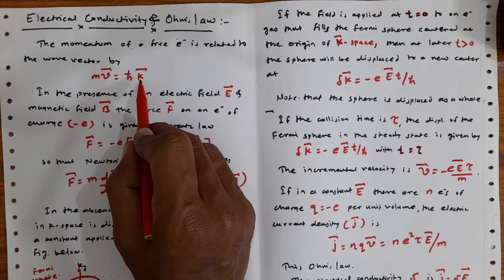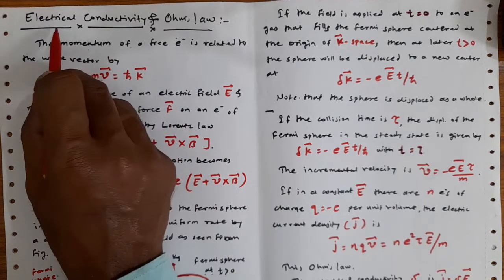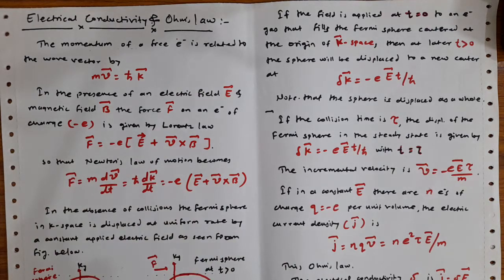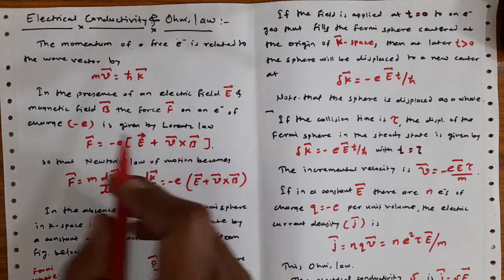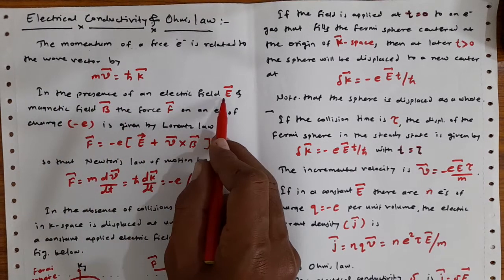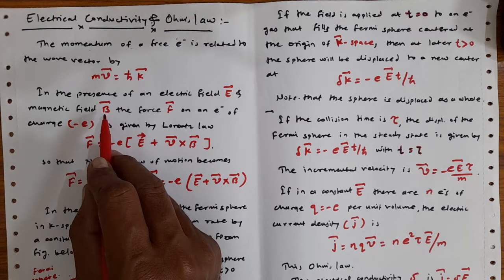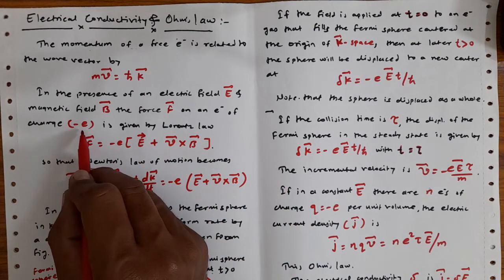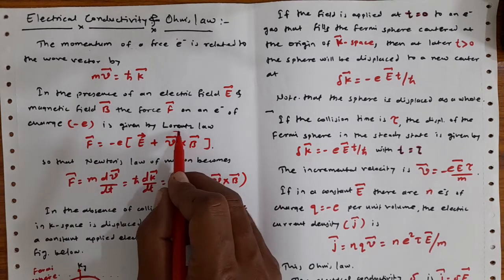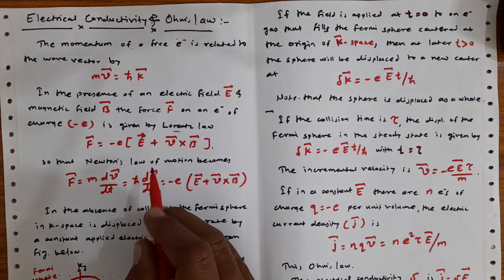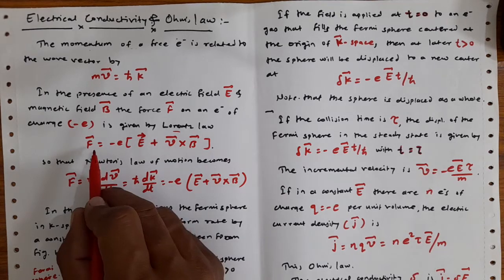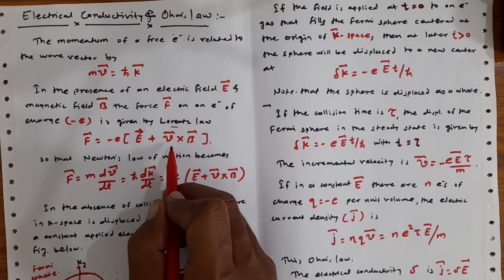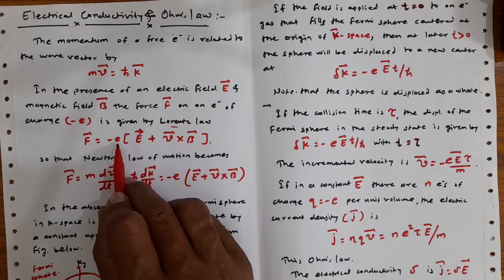To talk about electrical conductivity, we need to apply an electric field and magnetic field. In the presence of an electric field Ē and a magnetic field B̄, the force on an electron of charge −e is given by the Lorentz force law. From that law, we define F̄ = −e(Ē + v̄ × B̄), where −e can also be replaced with charge q as seen in other relations.